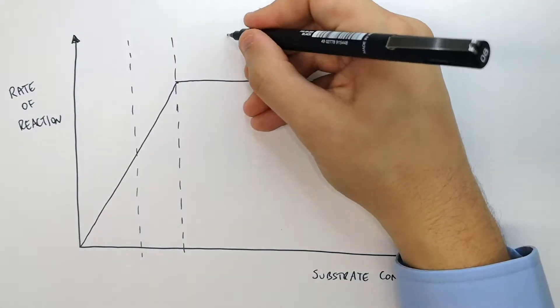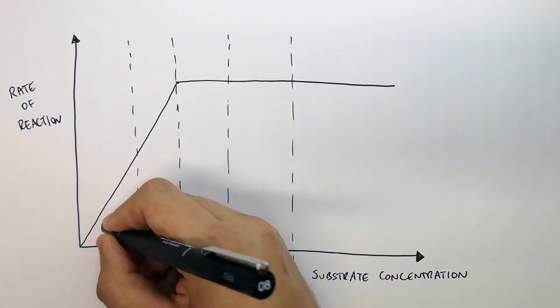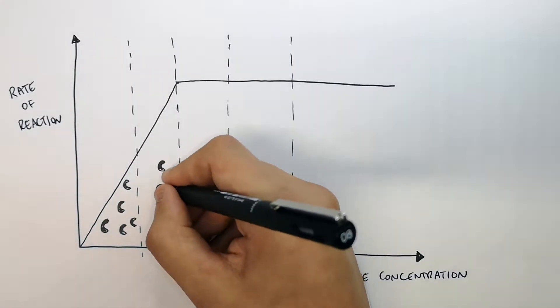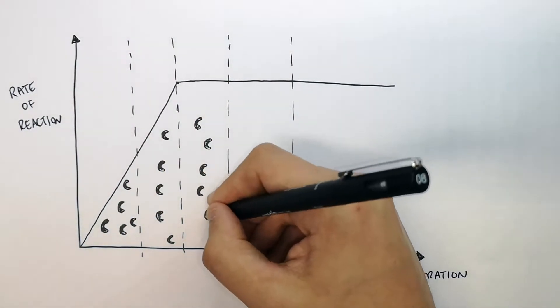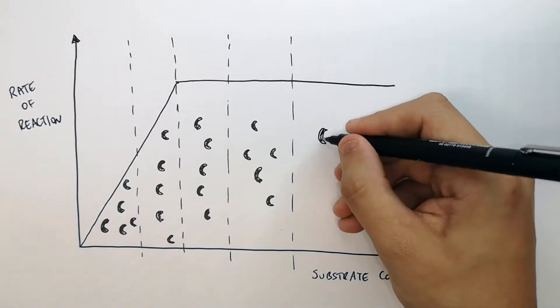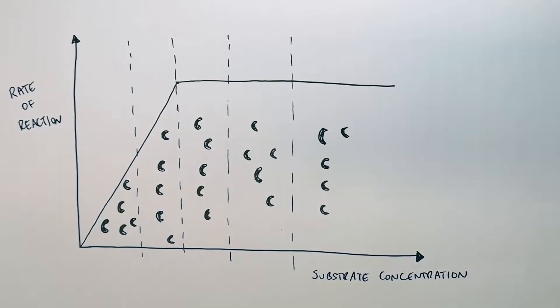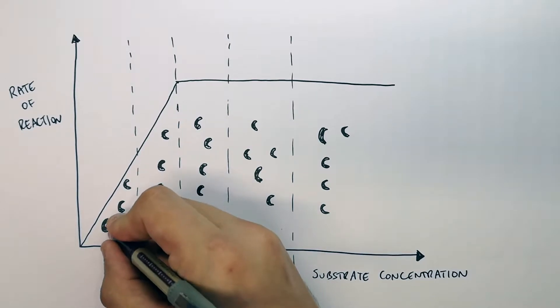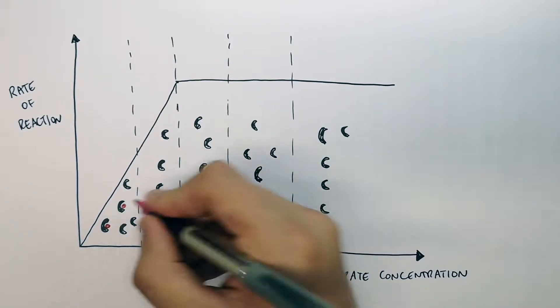So we're not increasing the enzyme concentration. As you can see here, I've represented six enzymes at each part of the substrate concentration increase.